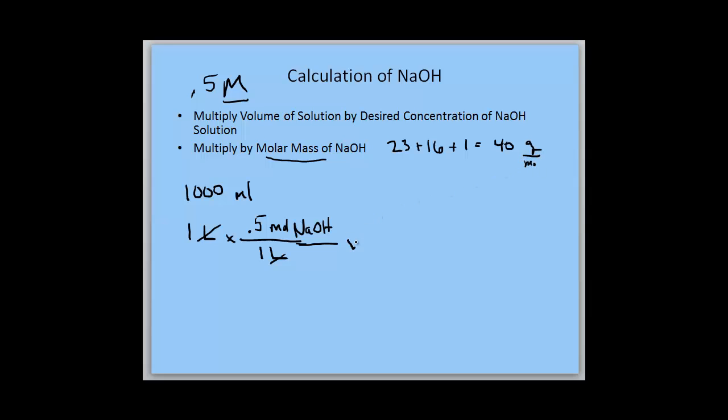We multiply by 40 grams per mole of NaOH, and our moles cancel.